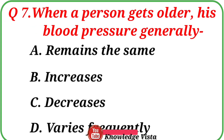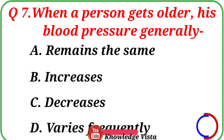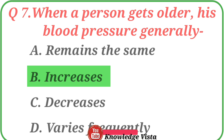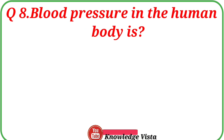Question number 7: When a person gets older, his blood pressure generally — Option A: Remains the same. Option B: Increases. Option C: Decreases. Option D: Varies frequently. The correct answer is option B, Increases. When a person gets older, his blood pressure generally increases.